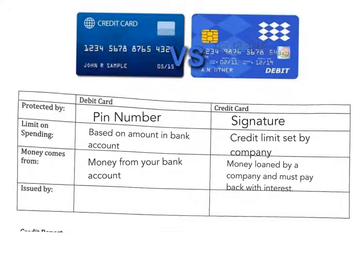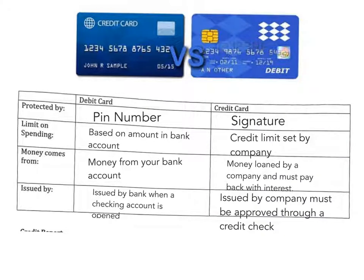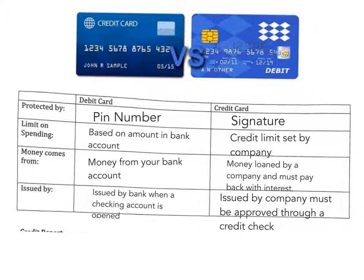Where does the money come from? A debit card uses your money from your bank account. A credit card is money loaned from a company that you will have to pay back later. A debit card is issued by your bank when you open a checking account. A credit card is issued by a company — you must be approved, and they will run a credit check. Both cards can be used to pay for groceries, gas, and different purchases.